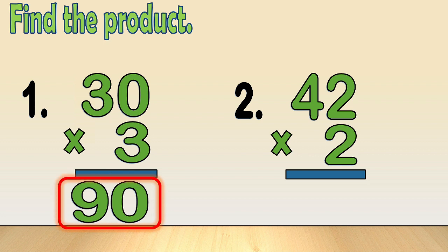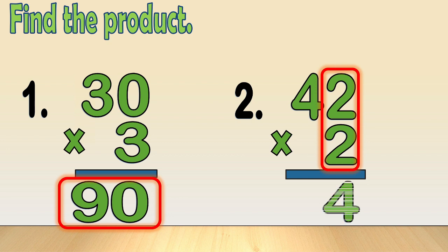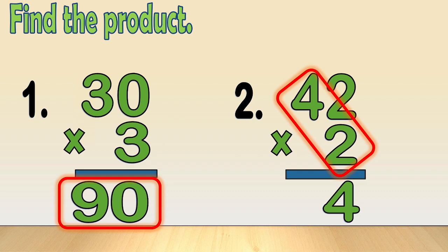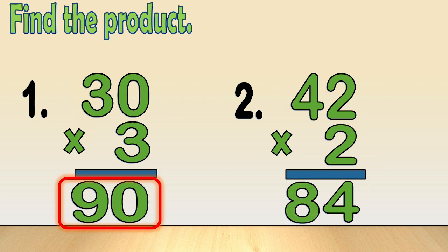Number 2: 42 times 2. Multiply the multiplier by the digits in ones and tens place, respectively, and write the product in their corresponding places. 2 times 2 is equal to 4, and 4 times 2 is equal to 8. So, 42 times 2 is equal to 84.